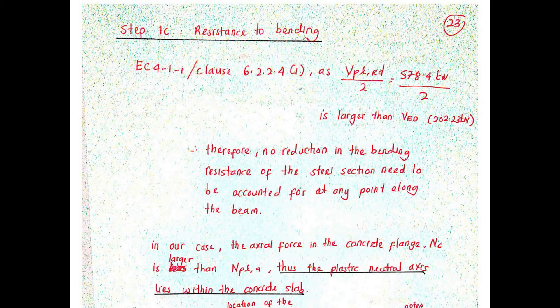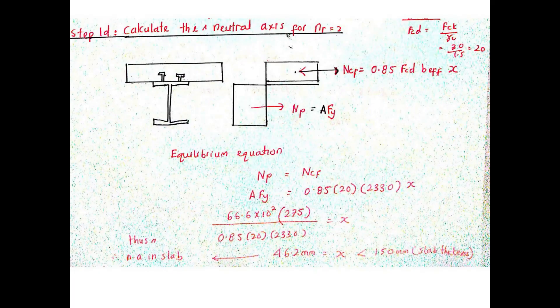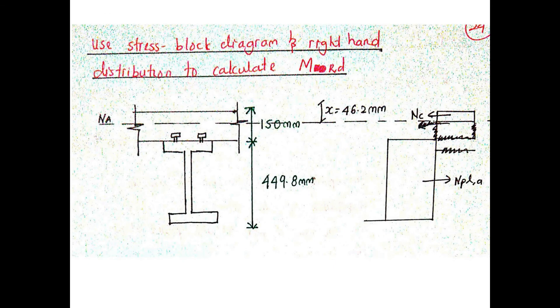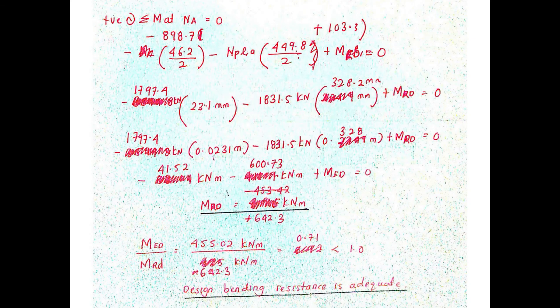Next is to verify the resistance of the composite beam due to bending. To calculate the bending capacity of the composite beam, we first need to identify the location of the plastic neutral axis. In this case, the plastic neutral axis lies in the slab, at 46.2 mm from the top concrete fibre. By taking moment at the plastic neutral axis, the bending capacity of the composite beam is calculated to be 642.3 kNm. Substituting into the equation MED/MRD, we conclude that the design bending resistance is adequate, as the ratio is less than 1.